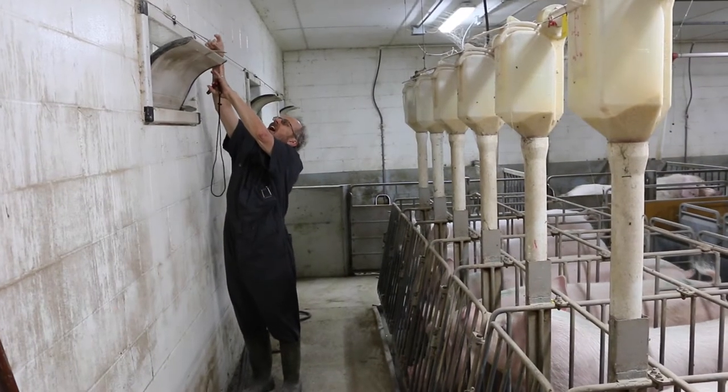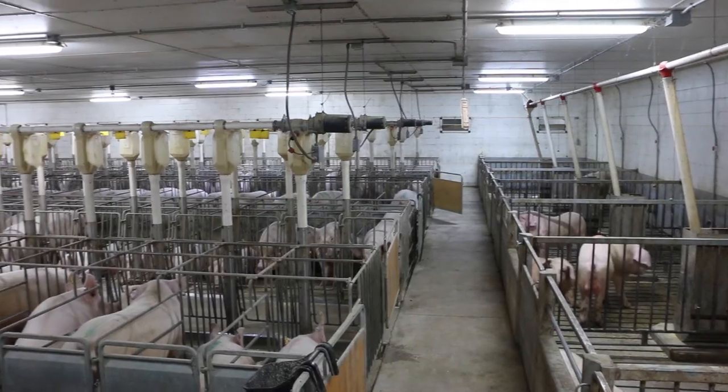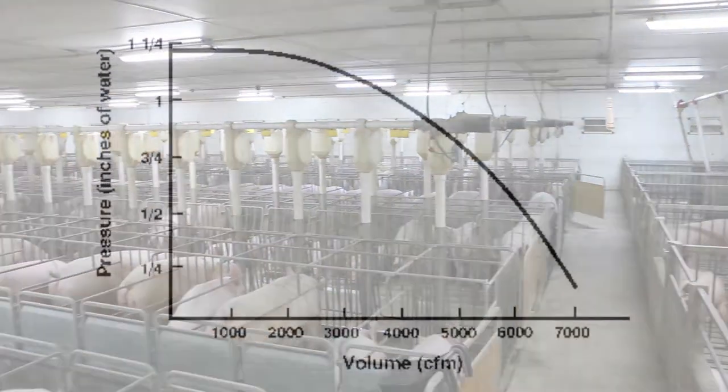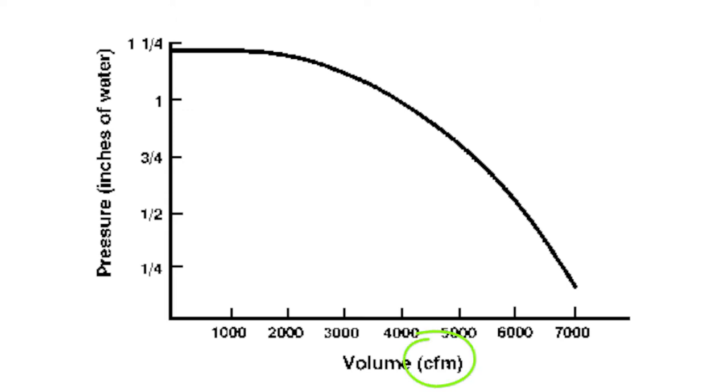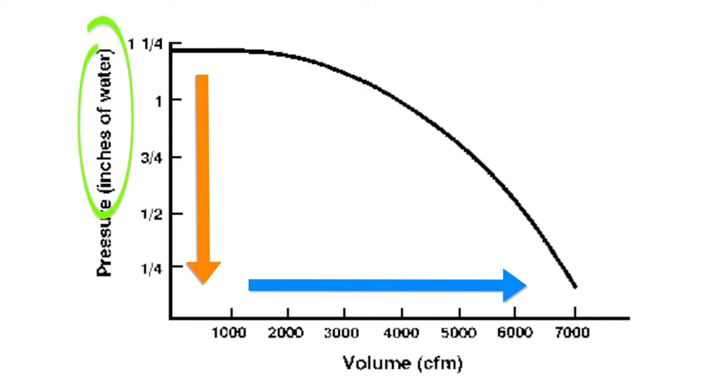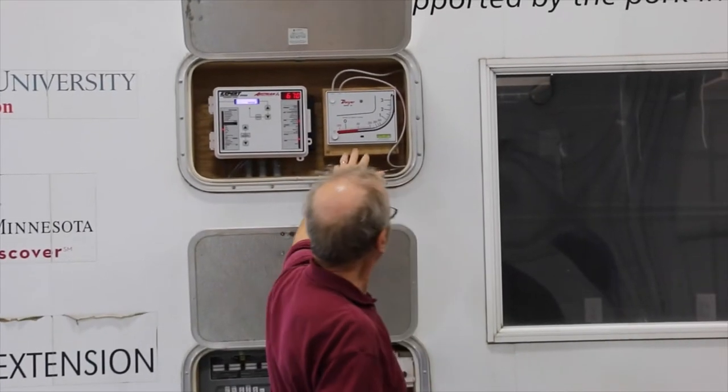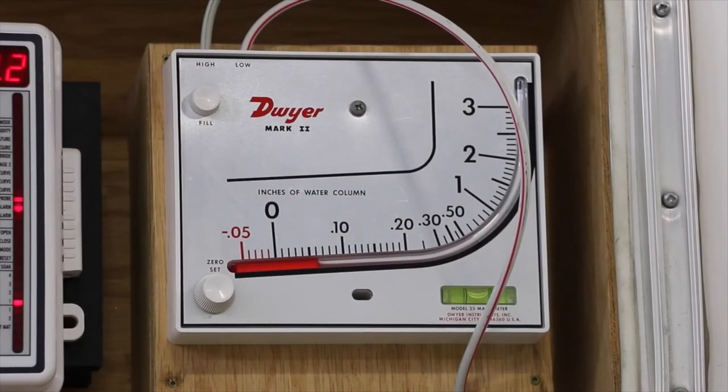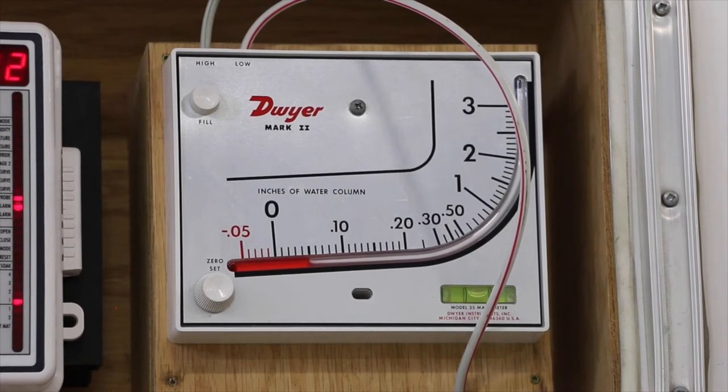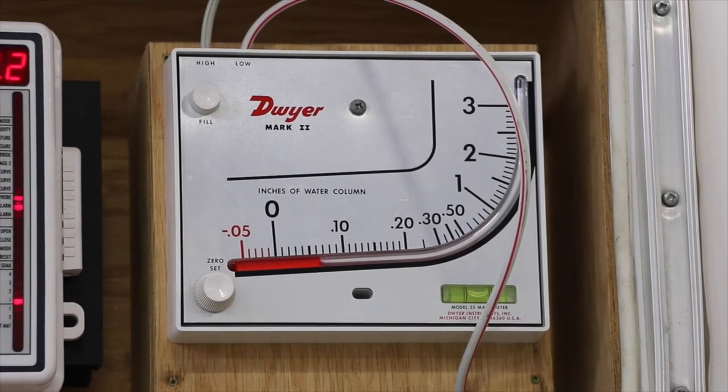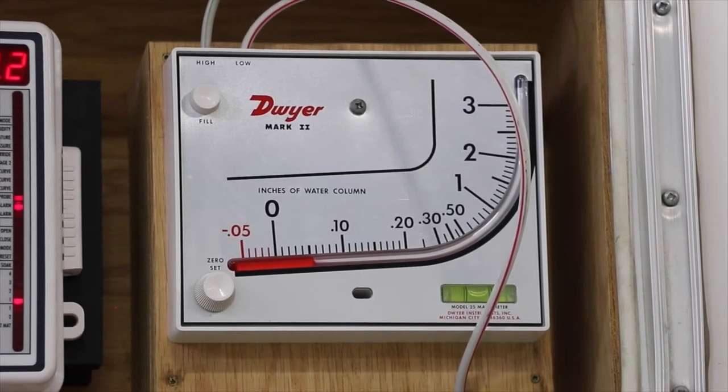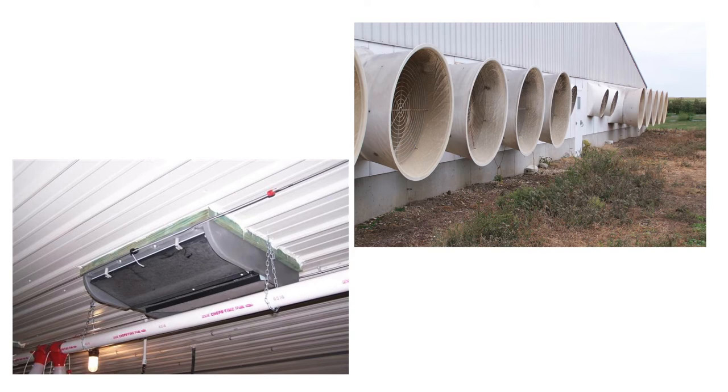Opening the inlet allows more air flow into the building, and the static pressure decreases. This graph shows how air flow, measured in cubic feet per minute, increases with decreases in the amount of static pressure, which is measured in inches of water. This is a device called the manometer that measures static pressure. Inside animal barns, the ideal static pressure should be between five hundredths of an inch and one-tenth of an inch in order to maintain good air flow. The fans and the inlets must operate together to maintain this ideal static pressure.